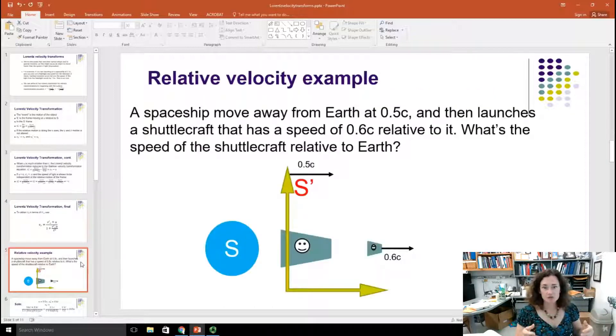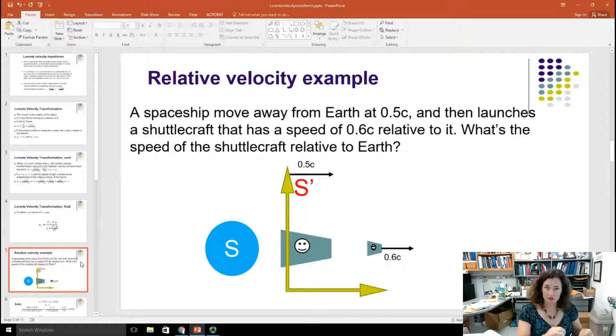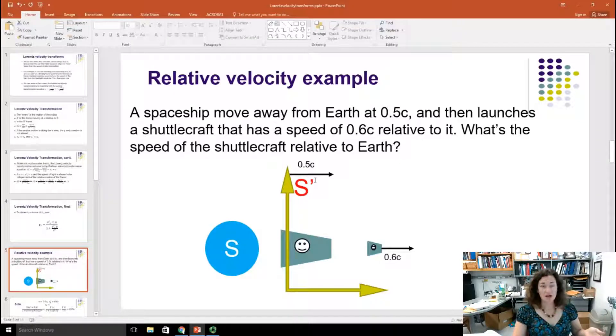Here it is. We have a spaceship moving away from Earth at half the speed of light, and it launches a shuttlecraft that has a speed of 0.6c relative to itself. So a shuttlecraft is launched from the spaceship, and the shuttlecraft is traveling 0.6c as measured by the moving frame of the spaceship. So what's the speed of the shuttlecraft relative to the stationary frame to Earth? Here I've drawn a little cartoon of it. Here's my moving frame S prime. That frame is moving with the speed of half the speed of light, and I've got my spaceship there with respect to that moving frame. And then there's my little tiny shuttlecraft, which is a little miniature spaceship there, and it's moving at 0.6c within the S prime frame.